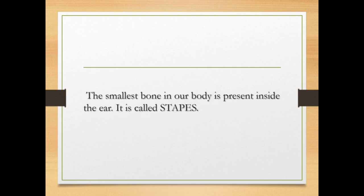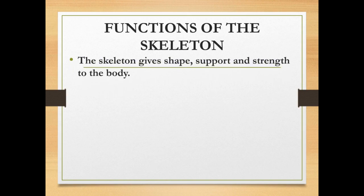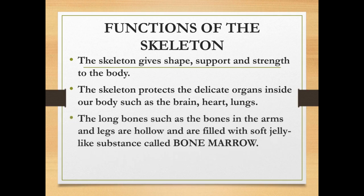Which is the smallest bone in our body? The smallest bone in our body is present inside the ear — it is called the stapes. Now, the functions of the skeleton: the skeleton gives shape, support and strength to the body. The skeleton protects delicate organs inside our body such as the brain, heart and lungs. The long bones such as the bones in the arms and legs are hollow and are filled with a soft jelly-like substance called bone marrow.